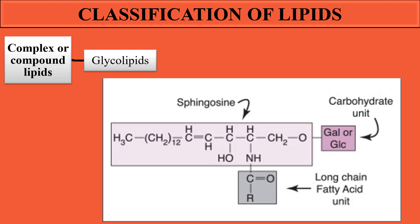Now let's look at the structure of glycolipids. Glycolipids are simple lipids combined with a carbohydrate unit. This carbohydrate unit may be galactose, glucose, or any other carbohydrate molecule. The alcohol, long chain fatty acids, and carbohydrate unit together form the complex molecule known as glycolipids — 'glyco' meaning carbohydrate unit.